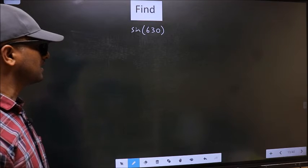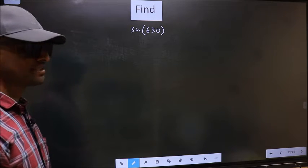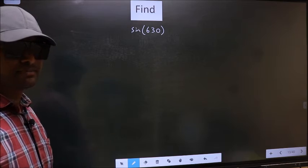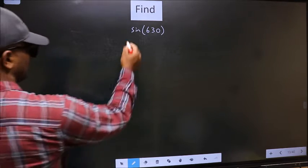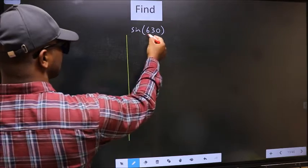Find sine 630. To find this, we should follow this method. See, here we have 630.